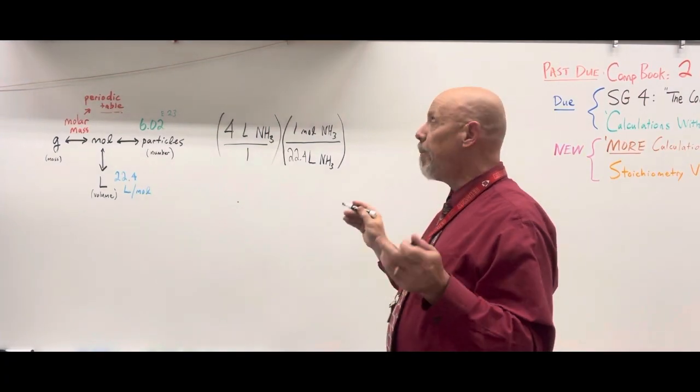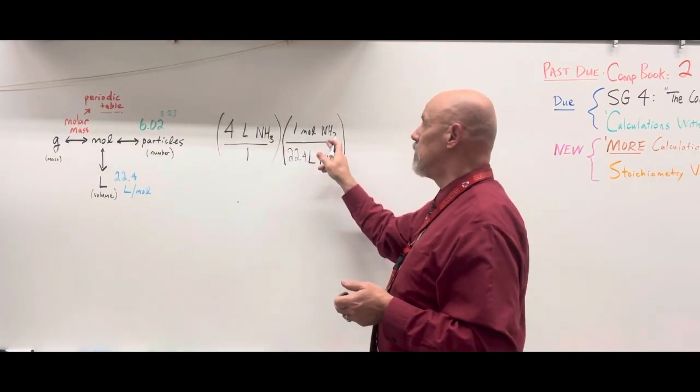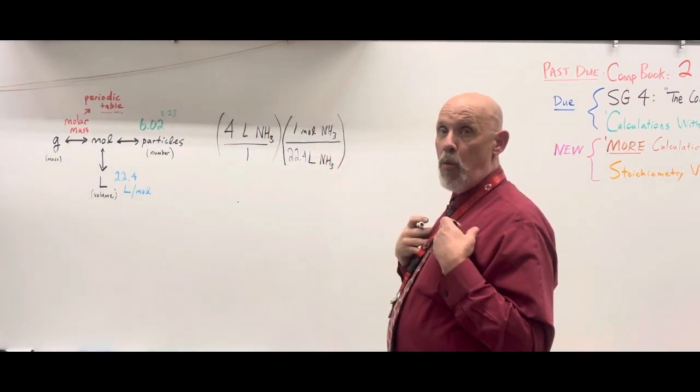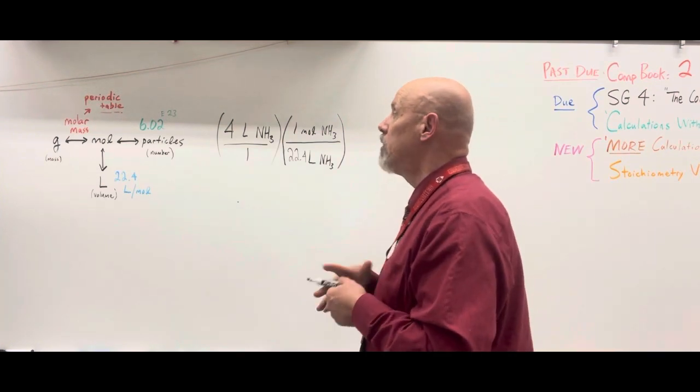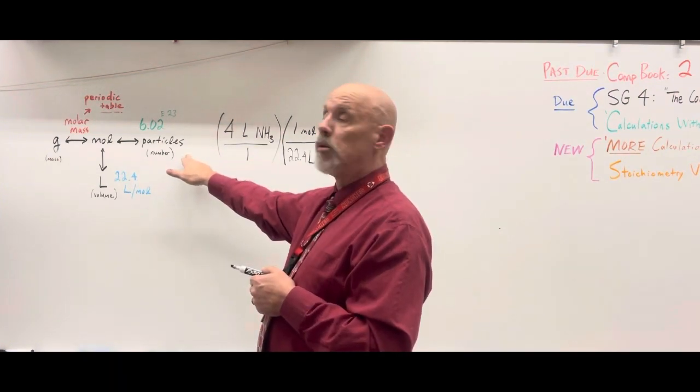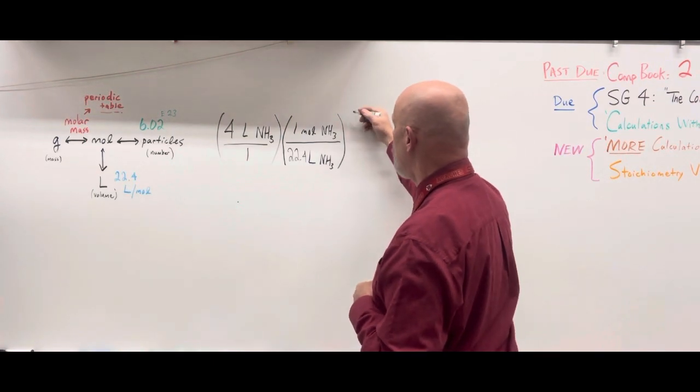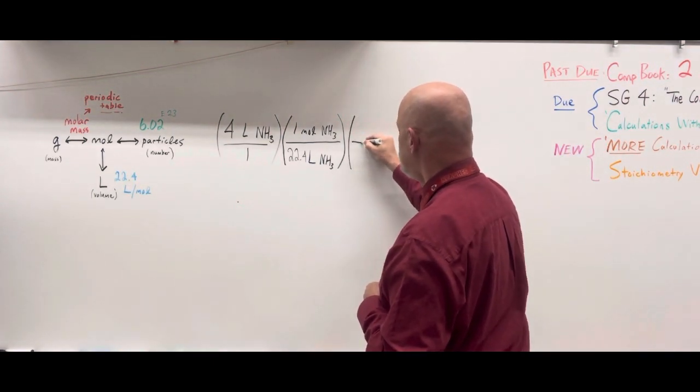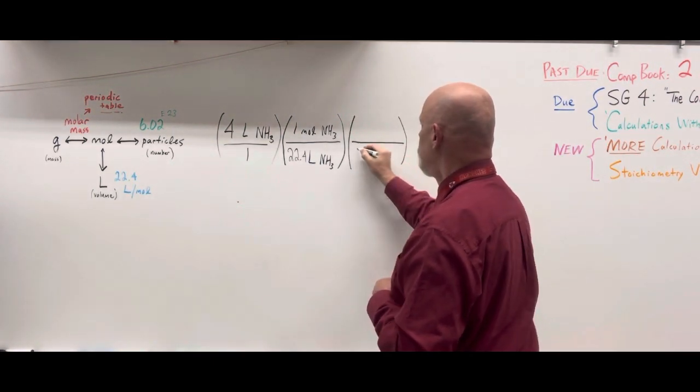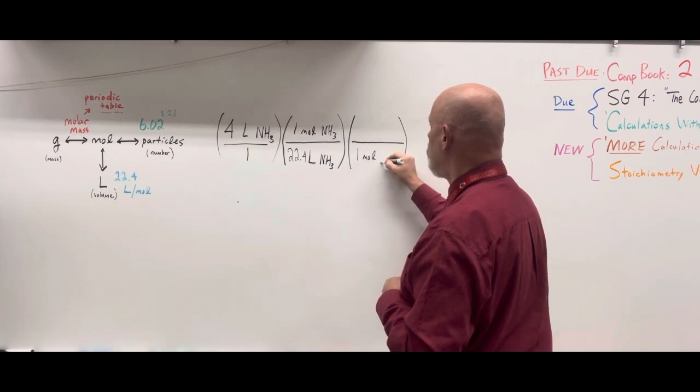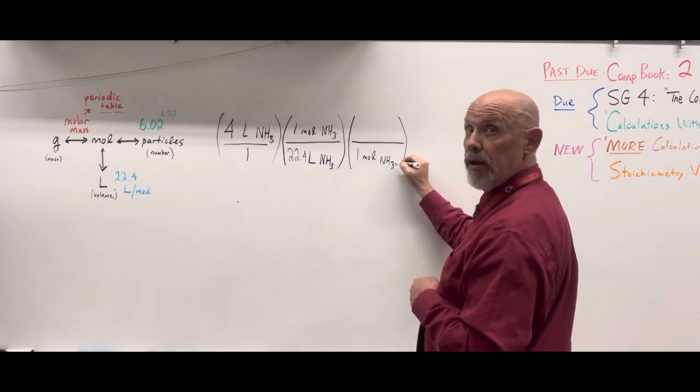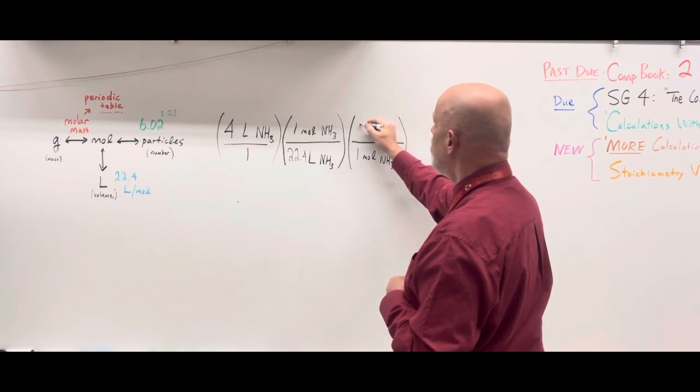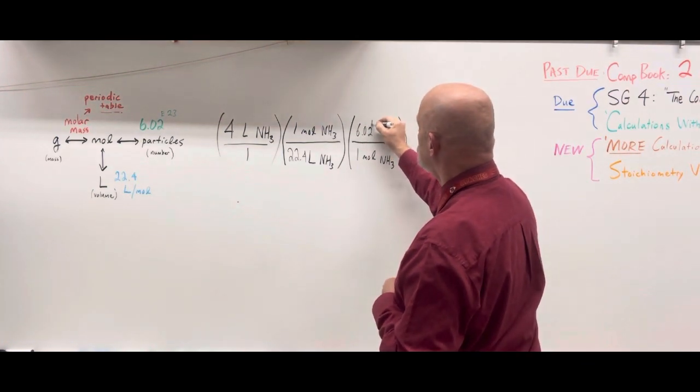Now, if we stop here, the liters will cancel and our answer will be in moles. But we don't want moles. We want the actual number of molecules of ammonia. So we add a second term and this is Avogadro's number. For every mole of any substance, and ammonia NH3 is a substance, we're going to have 6.02 times 10 to the 23rd